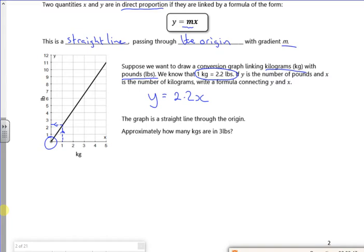So the graph is a straight line through the origin. So approximately how many kilos are in 3 pounds? So I'm coming across at 3 pounds, I'm going down. So that's the order of the GCSE. But really what I want to do is I want to find the x when y is 3. So 3 equals 2.2x. So 3 over 2.2 is x, which is approximately 1.36 kilos. So that's straightforward, that's nice enough.